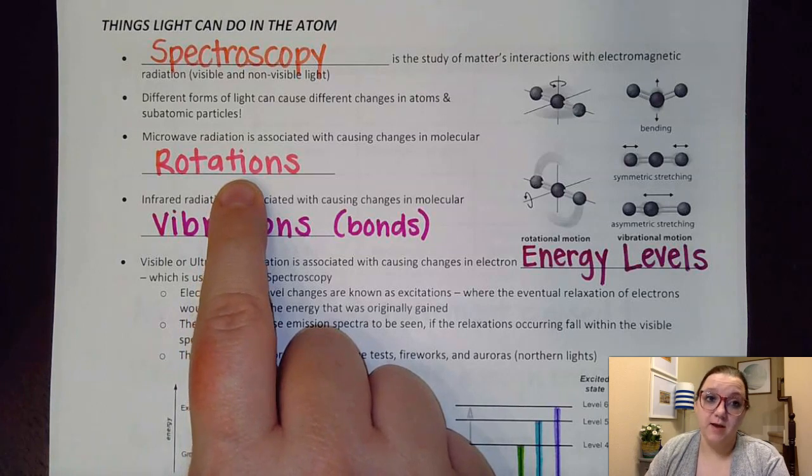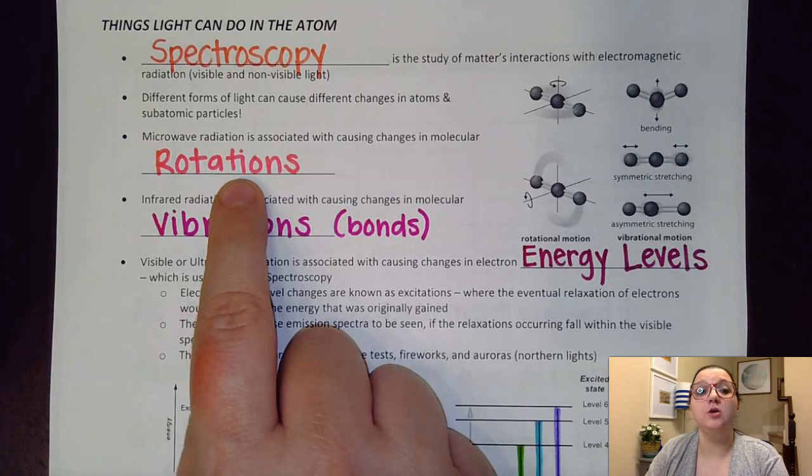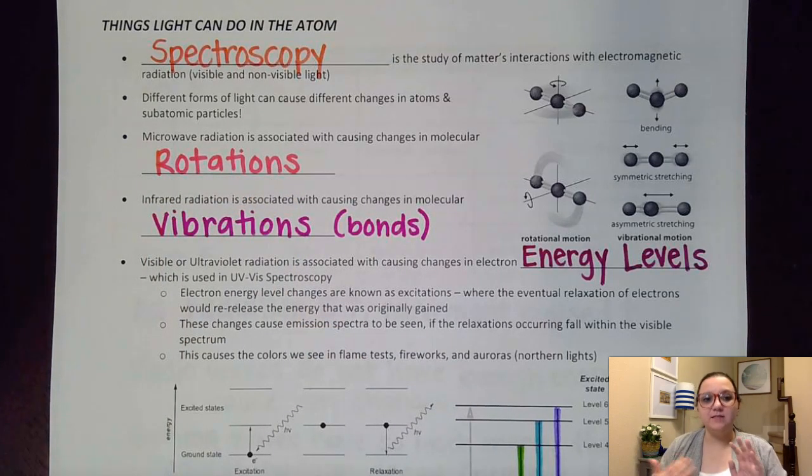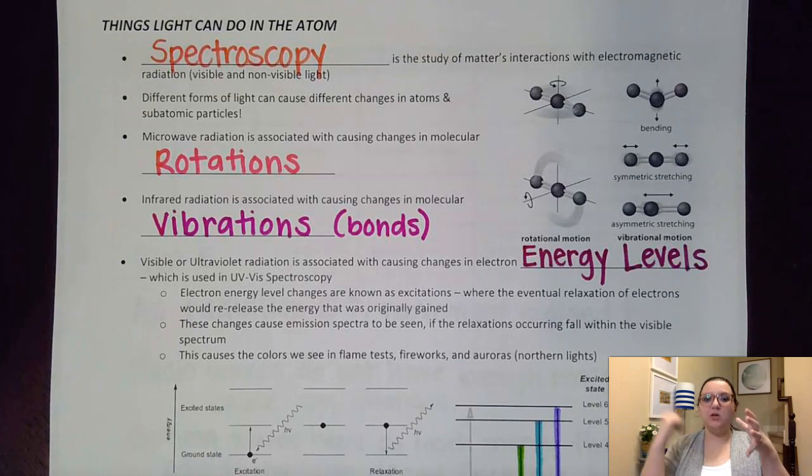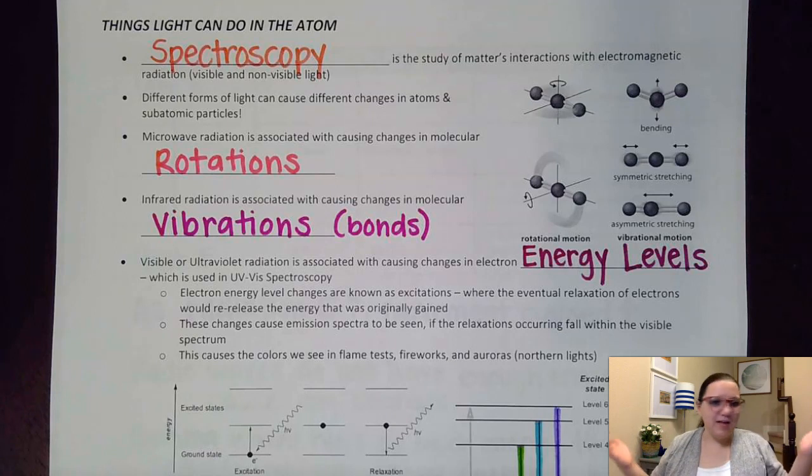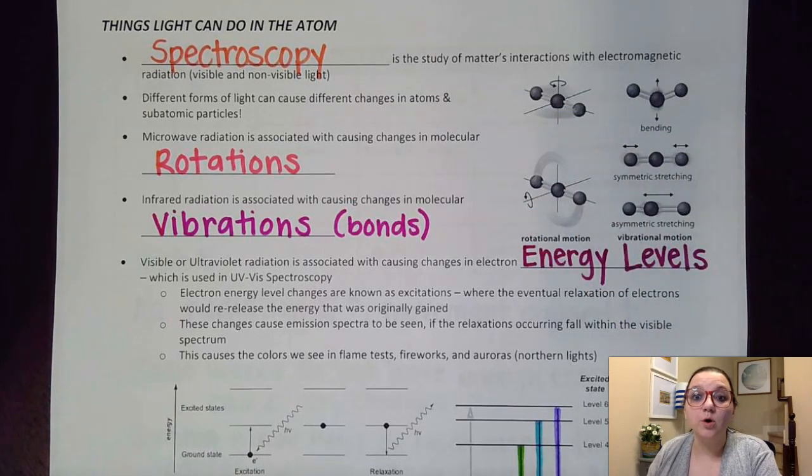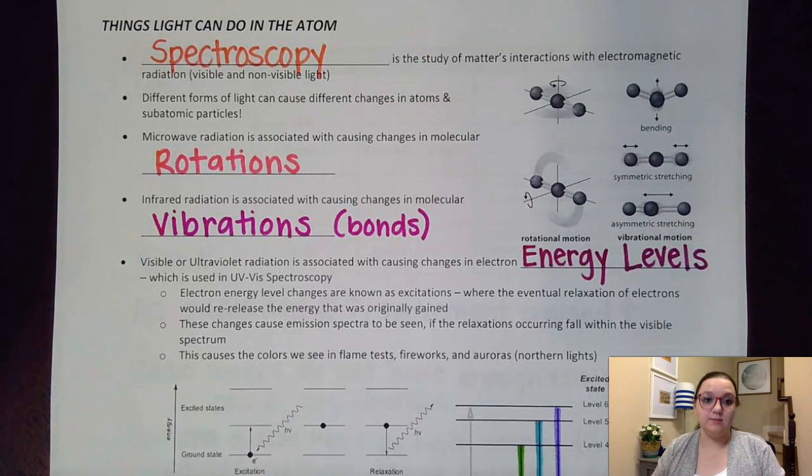It says here that different forms of light can cause different changes in atoms and subatomic particles depending on how much energy that light source has. So let's start off with the first type here that it mentions, which is microwave radiation. Microwave radiation causes changes in molecular rotations. And a nice way of remembering that is the fact that a microwave plate rotates inside of the microwave. And so that's a helpful way of just remembering that microwave radiations do those rotations.